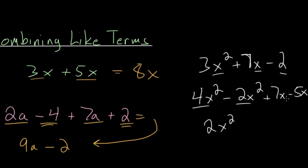And here you have 7x's and you're taking away 5x's. So you would have 2x left over. So as long as they have the same variable in this case the x squared term then they can be combined together.